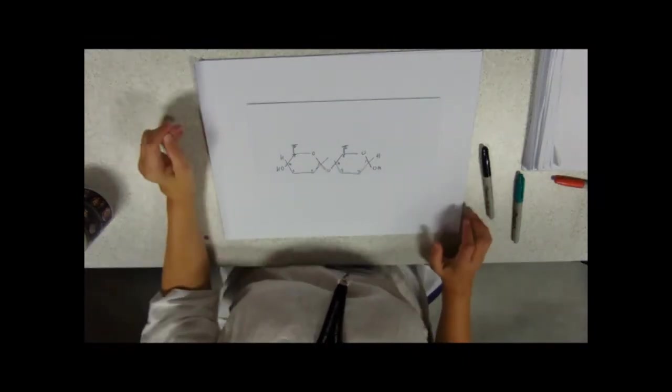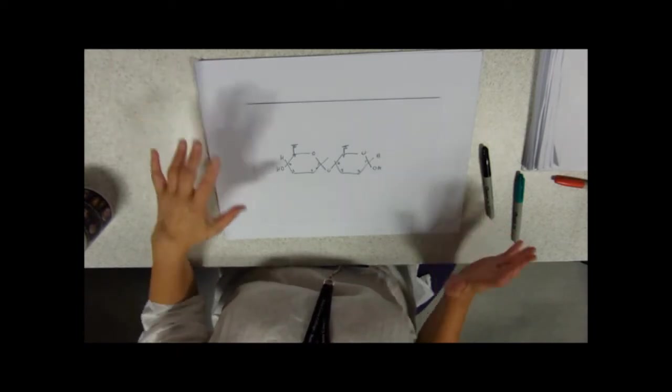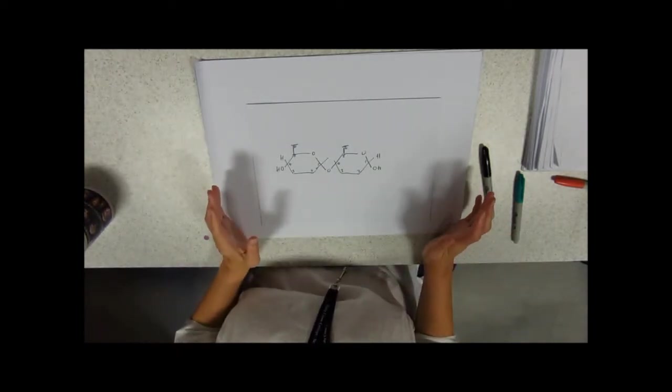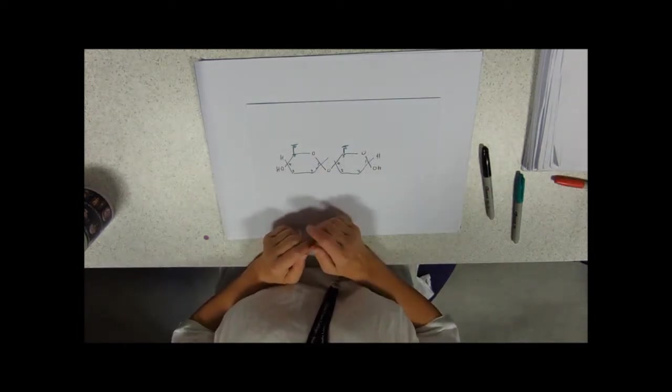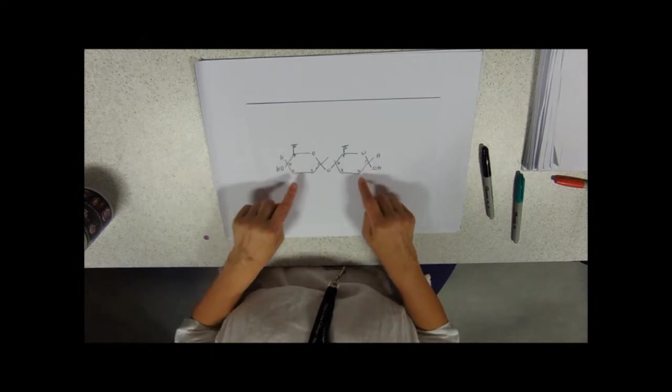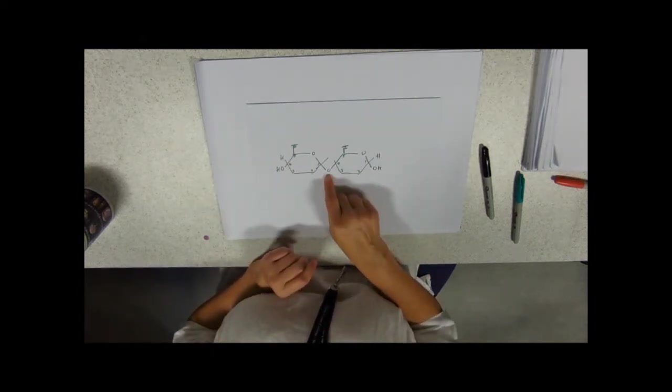This video is about polysaccharides. We need to know four polysaccharides, but let me just remind you of what polymer means. Here I've got a dimer, this one's maltose, two monosaccharides, those two hexagons, joined together by a glycosidic linkage.